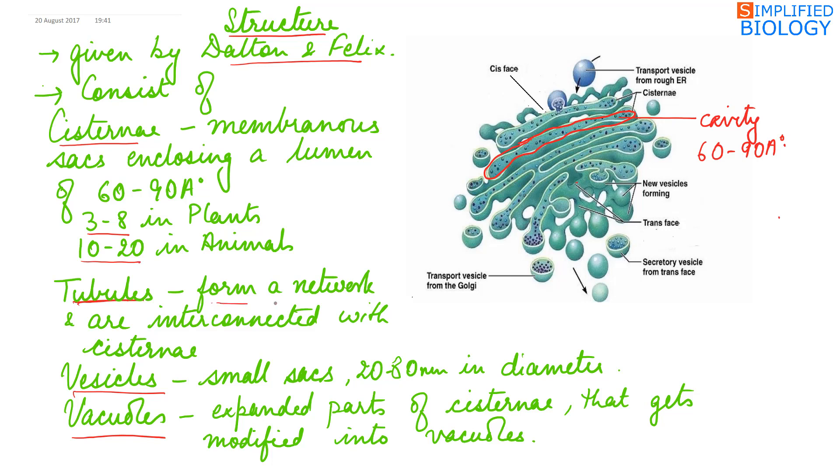Tubules form a network and are interconnected with the cisternae. They are present towards the periphery of the cisternae and are formed by the breakdown of cisternae.